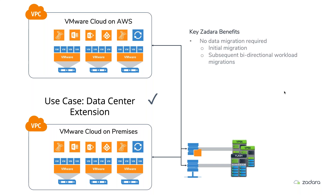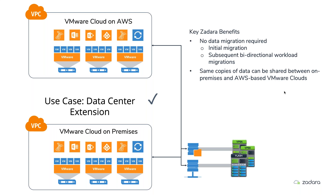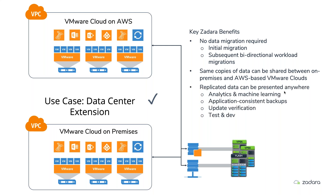With cloud-adjacent data extension, no migration is required. You get truly bi-directional workload migration, the same copy of data can be shared between both environments without synchronization concerns, and replicated data can be presented anywhere. This enables powerful use cases: machine learning, analytics, application-consistent backups, update verification, running new app versions against real data — all leverageable across multiple sites.